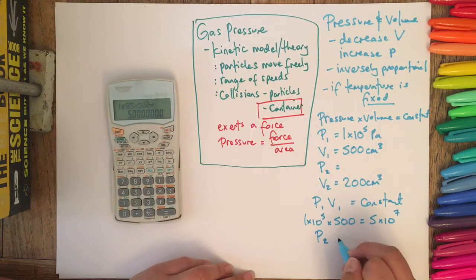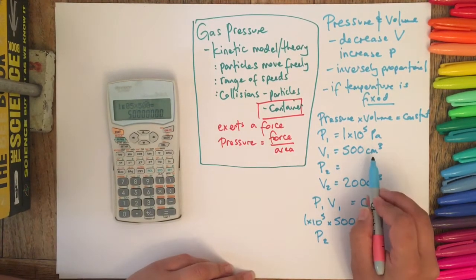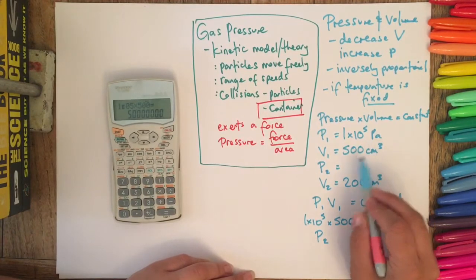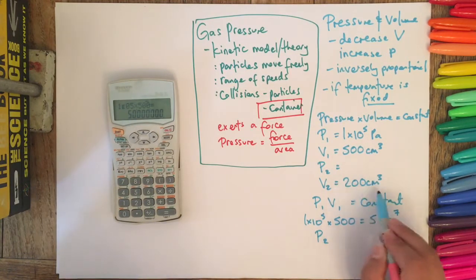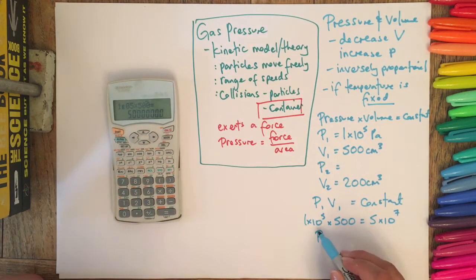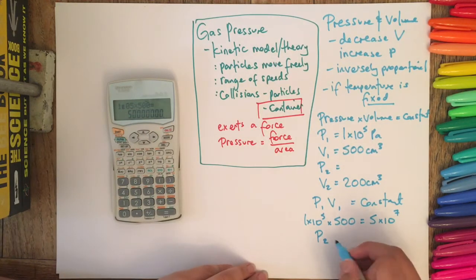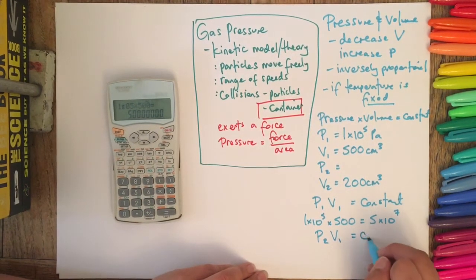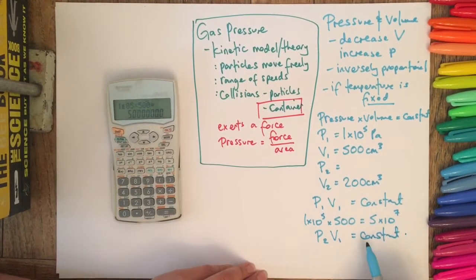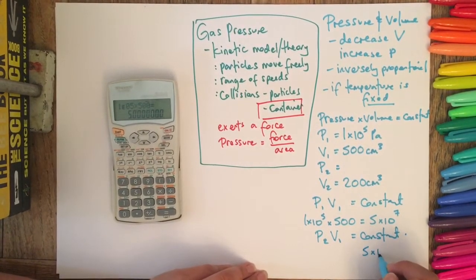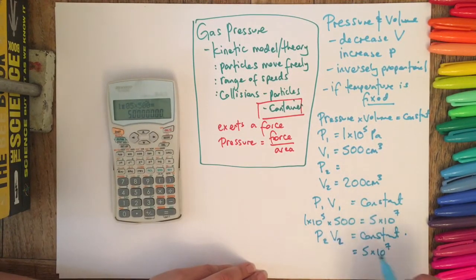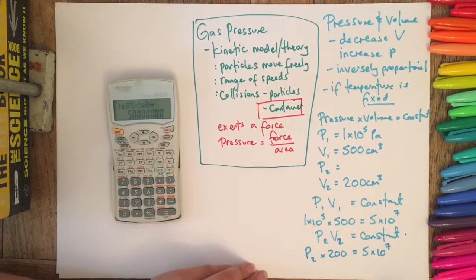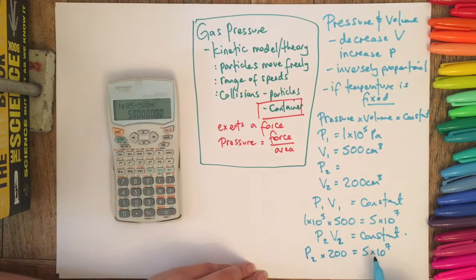So it doesn't really matter if you're using centimeters cubed instead of say meters cubed, as long as you're using the same unit with the next one. So our ending pressure is what we want to find out. We're multiplying it by V2 equals constant. So we know that our constant is 5 times 10 to the 7, and we know that our ending volume is 200 centimeters cubed. And so then we just need to calculate this.